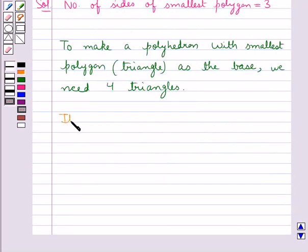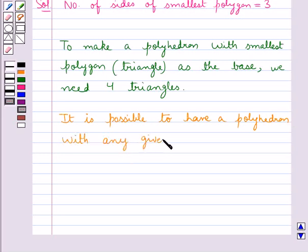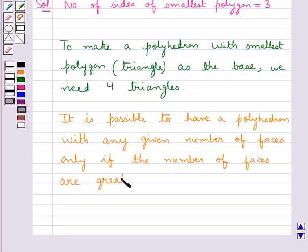Thus we can say that it is possible to have a polyhedron with any given number of faces, only if the number of faces are greater than or equal to four.